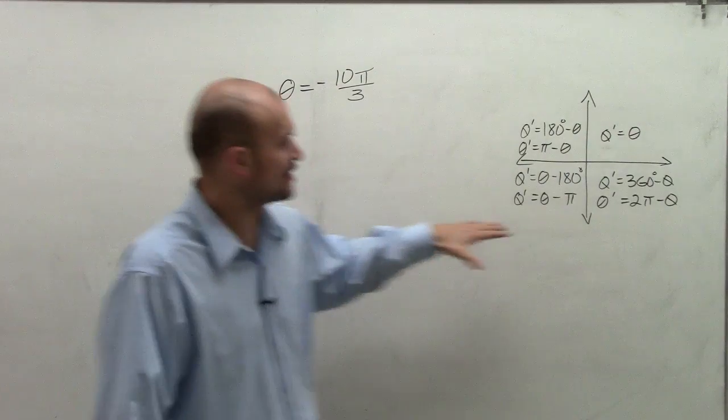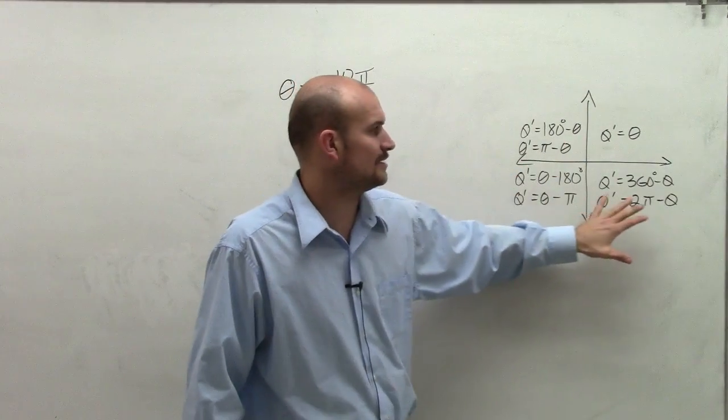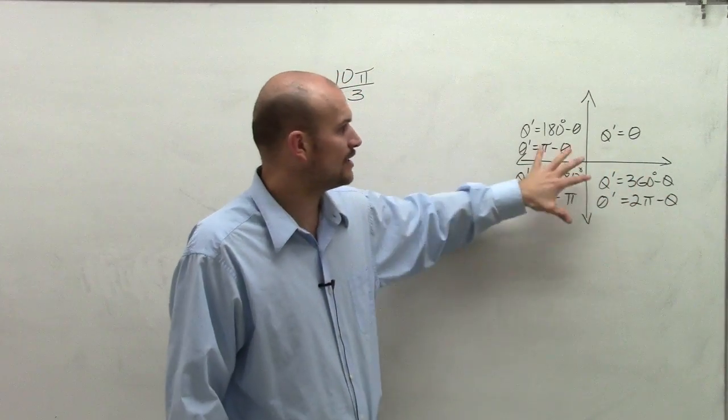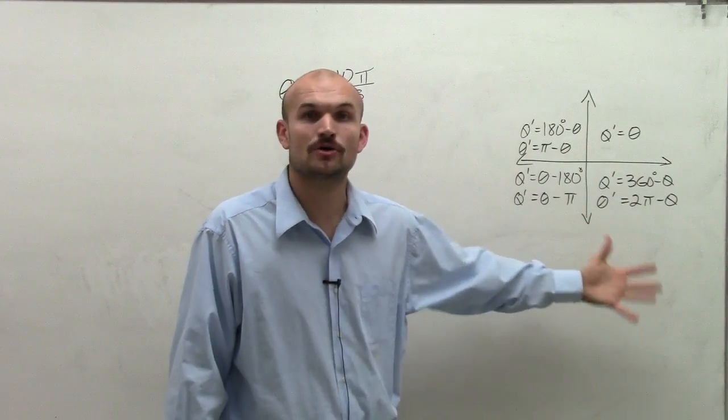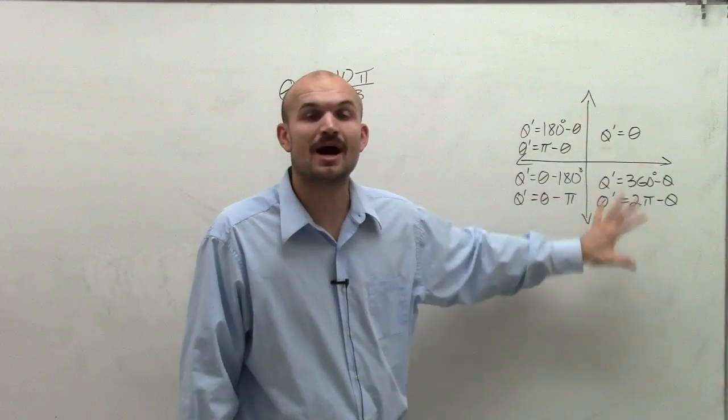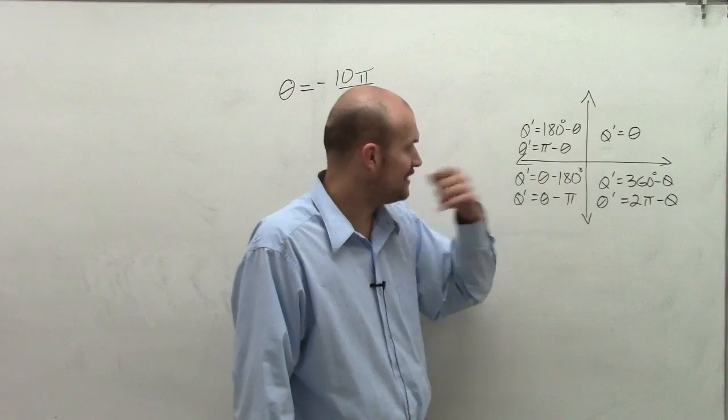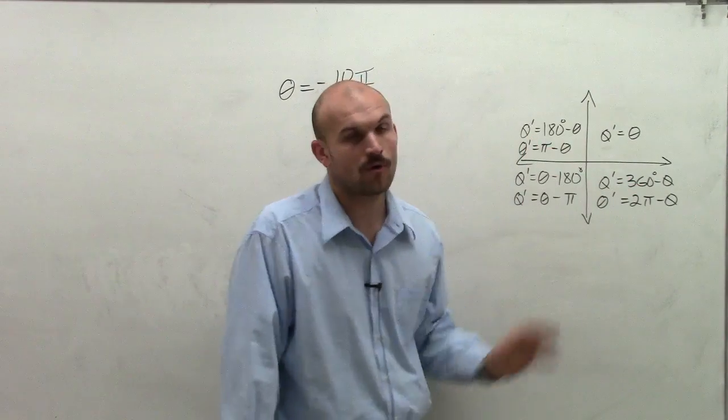One thing we notice is I gave you a cheat sheet up here on what are the formulas for using coterminal angles when you find which quadrant the terminal angle lands in. And this works for angles in degrees or in radians.